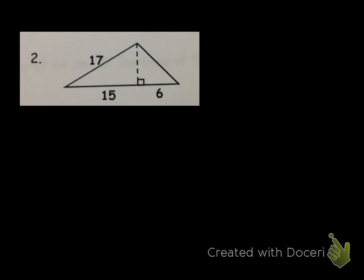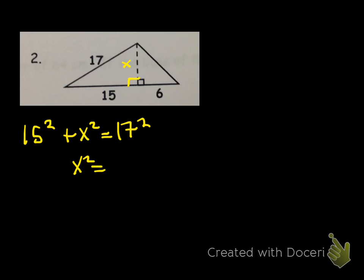So a triangle — now this is what I'm talking about, about kicking it up a notch. In order to solve this, we need to know what the height is. But in order to find the height, we know that this is also a right angle, so we have a right triangle and we can use the Pythagorean theorem. If we say that this is x, we would do 15 squared plus x squared equals 17 squared. And then after that, you basically get x squared equals 64, so that means that x has to be equal to 8.